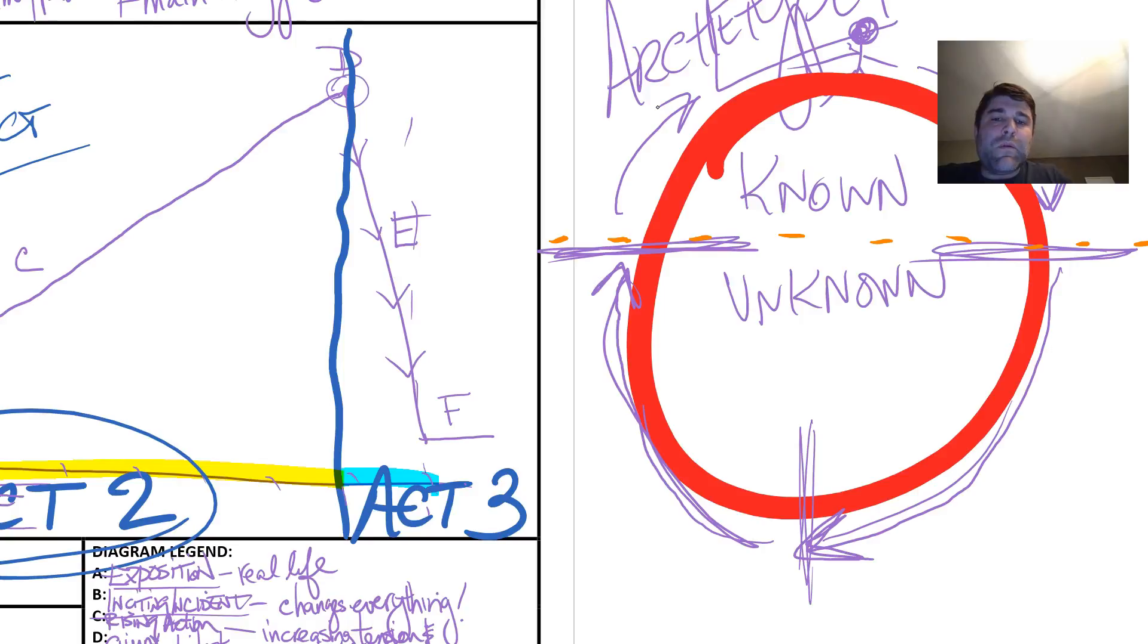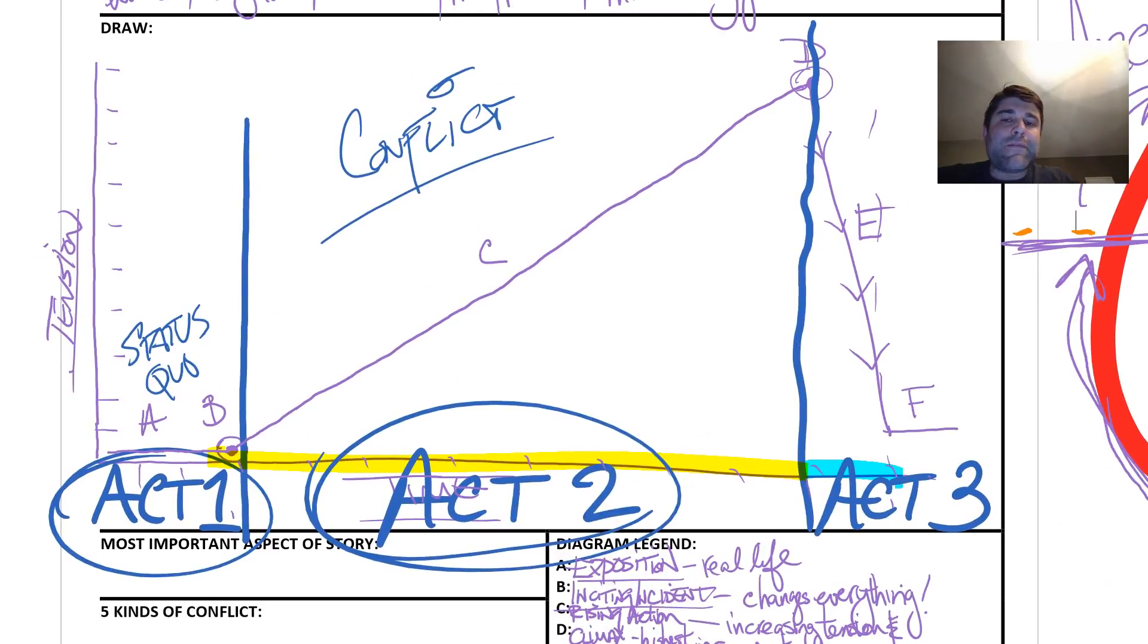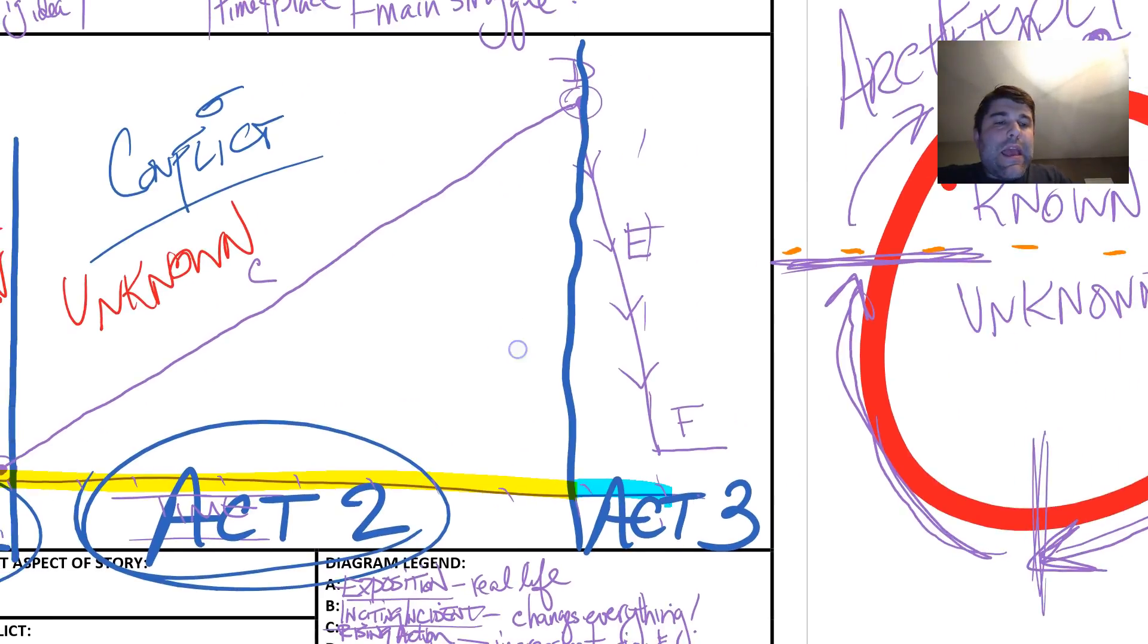Let's connect this back to Aristotle and Freytag. We've got Act 1—status quo, the hero's normal world, his known world. Then he gets into conflict, crosses the threshold into the unknown. He hits the climax, everything resolves really quickly, and he quickly returns to the known world.